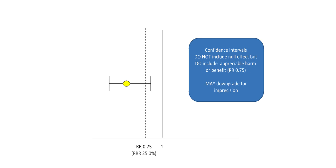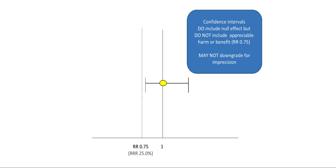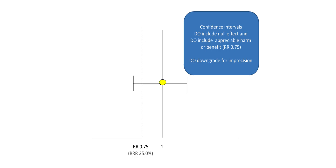In the next example, the confidence intervals cross the 25% relative risk reduction effect; under those circumstances one may reasonably downgrade the quality of evidence. The next example shows a relative risk close to 1 with a relative risk reduction around 0, but the confidence intervals may be narrow enough to exclude a reasonable effect of 25% relative risk reduction — one may not downgrade for imprecision under those circumstances, while it obviously remains a judgment depending on the threshold of other outcomes. Finally, one may find a pooled estimate indicating no effect but with confidence intervals wide enough to still include appreciable benefit crossing the 25% relative risk reduction estimate, and under those circumstances one may reasonably downgrade the quality of evidence.